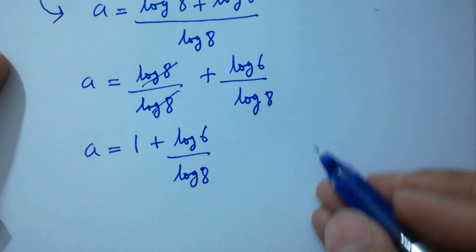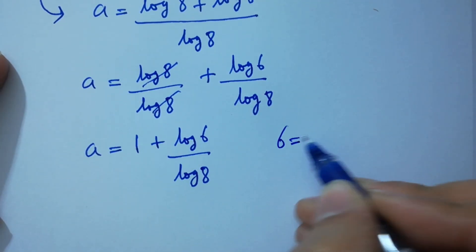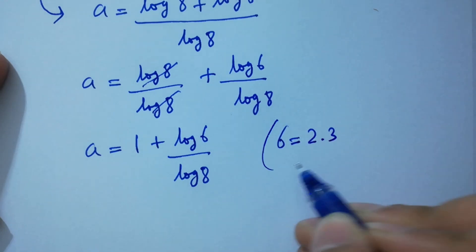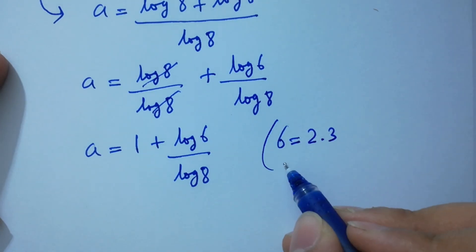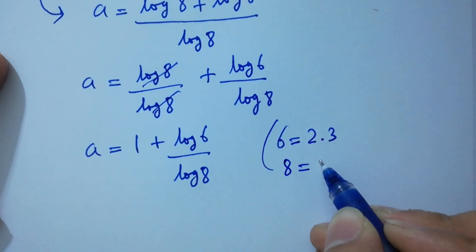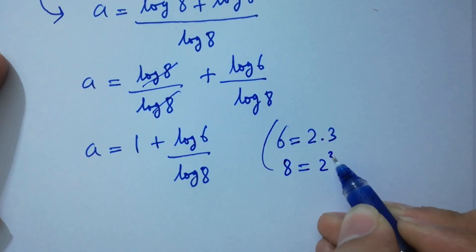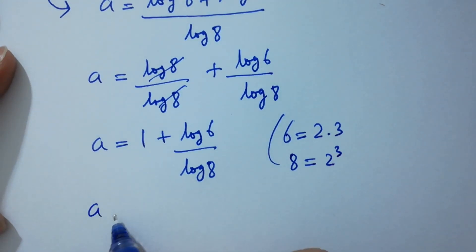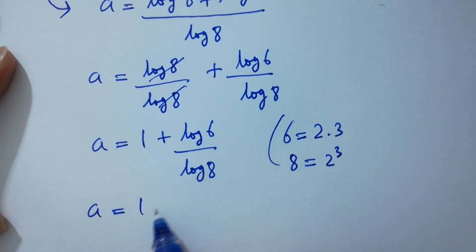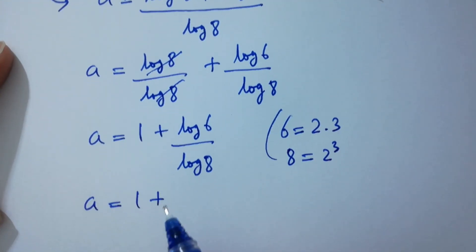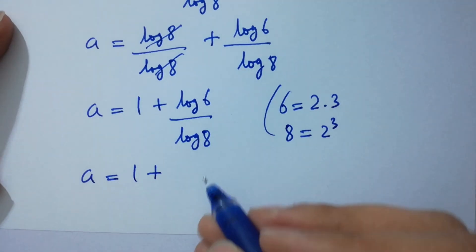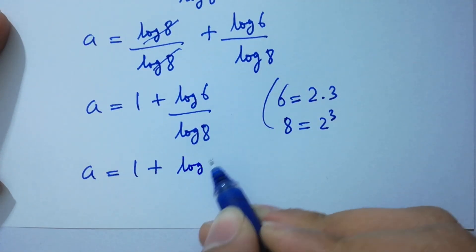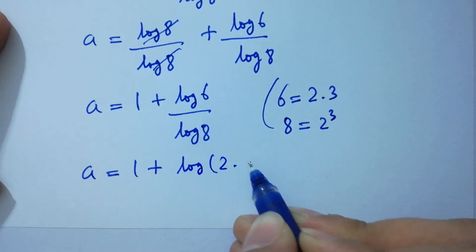Since 6 equals 2 times 3 and 8 equals 2 cubed, a equals 1 plus log(2 times 3) over log(2 cubed).